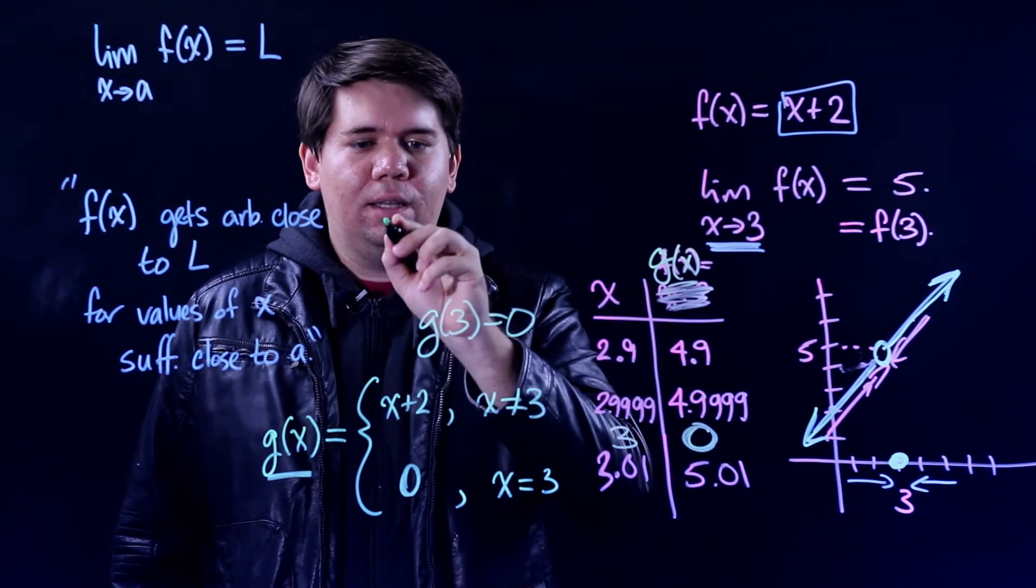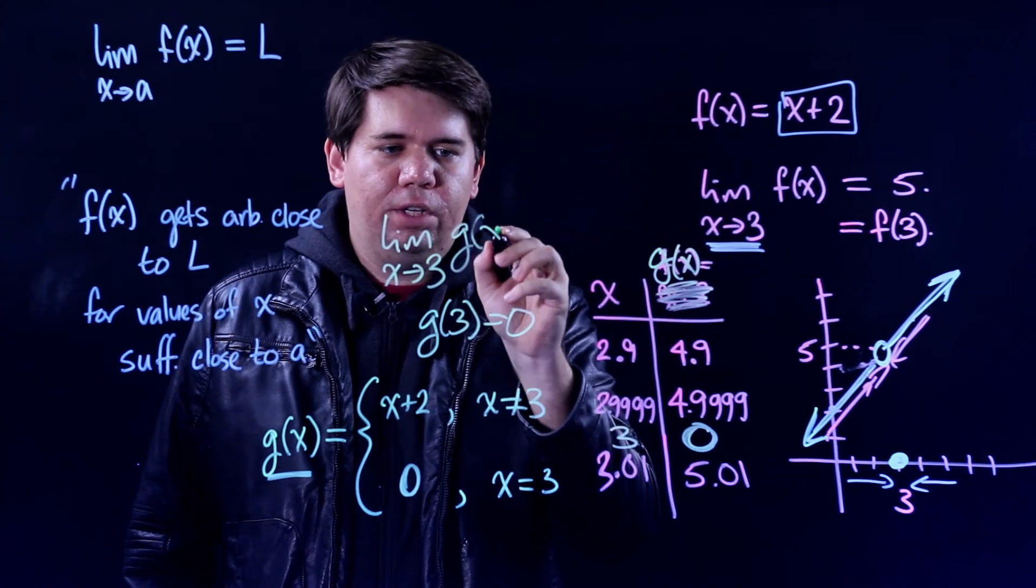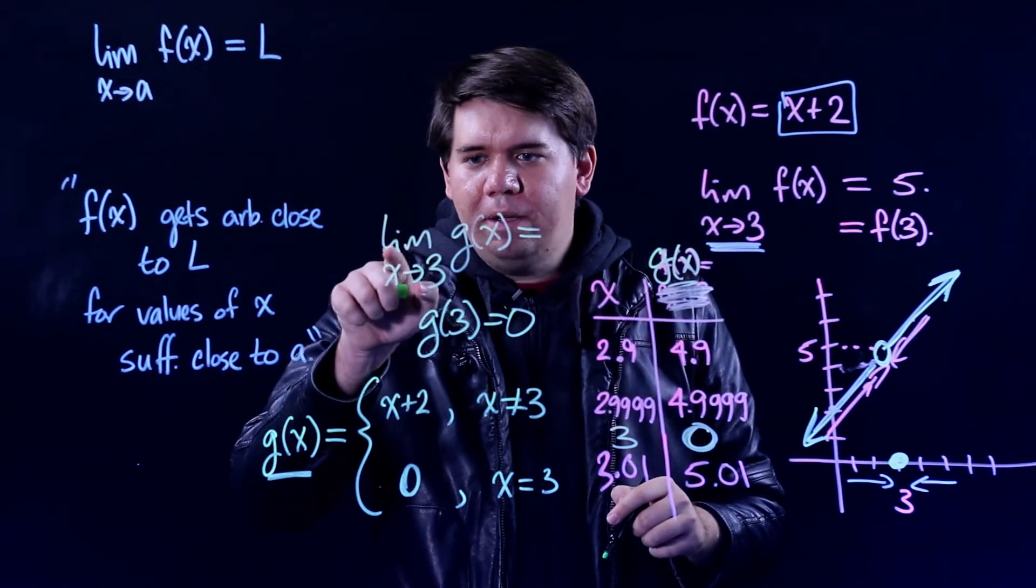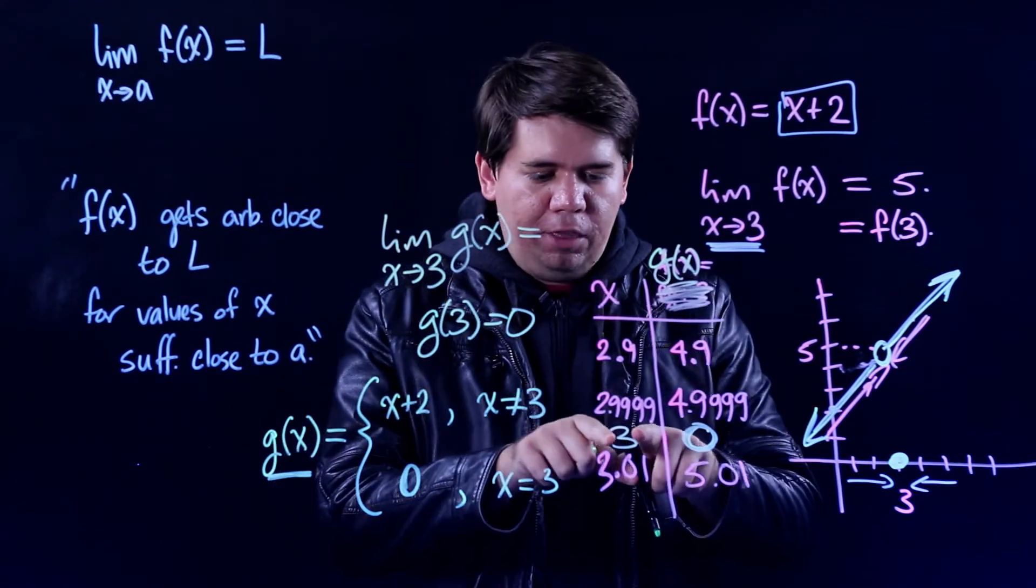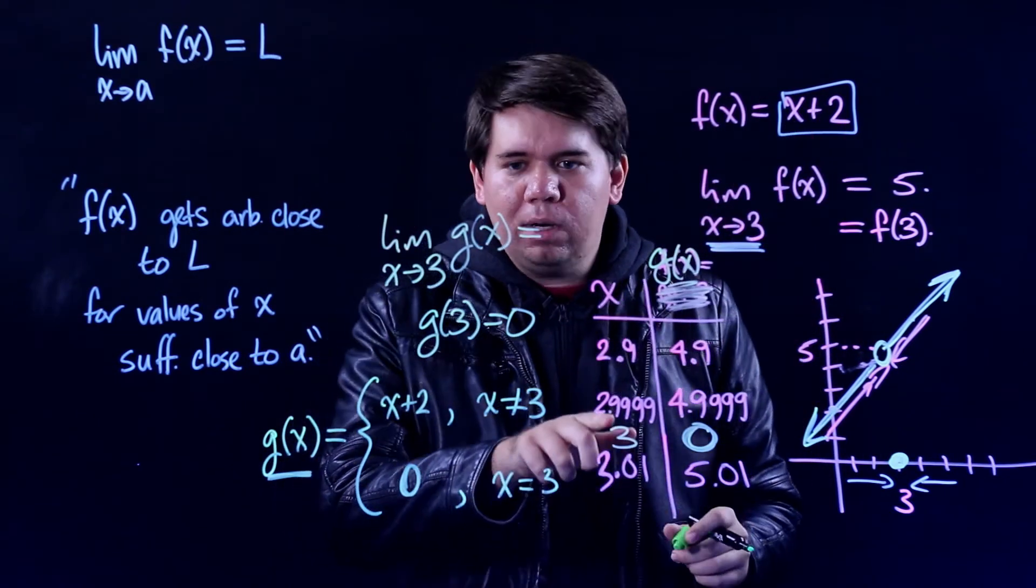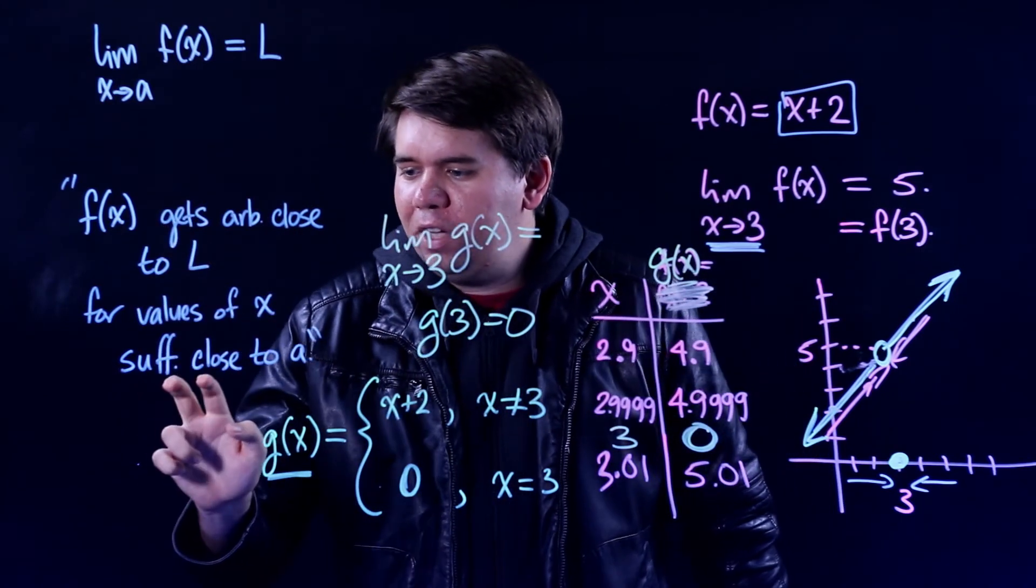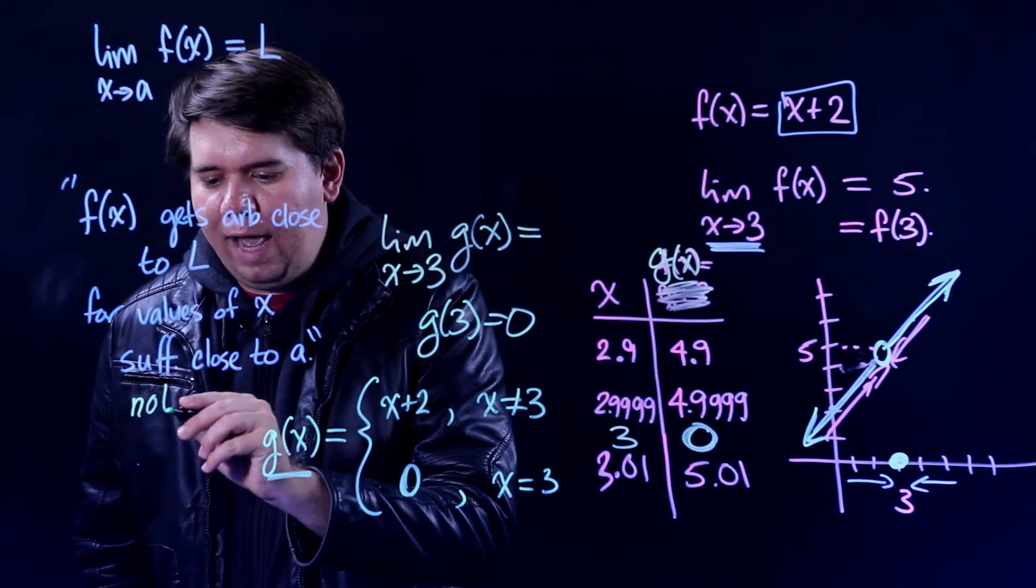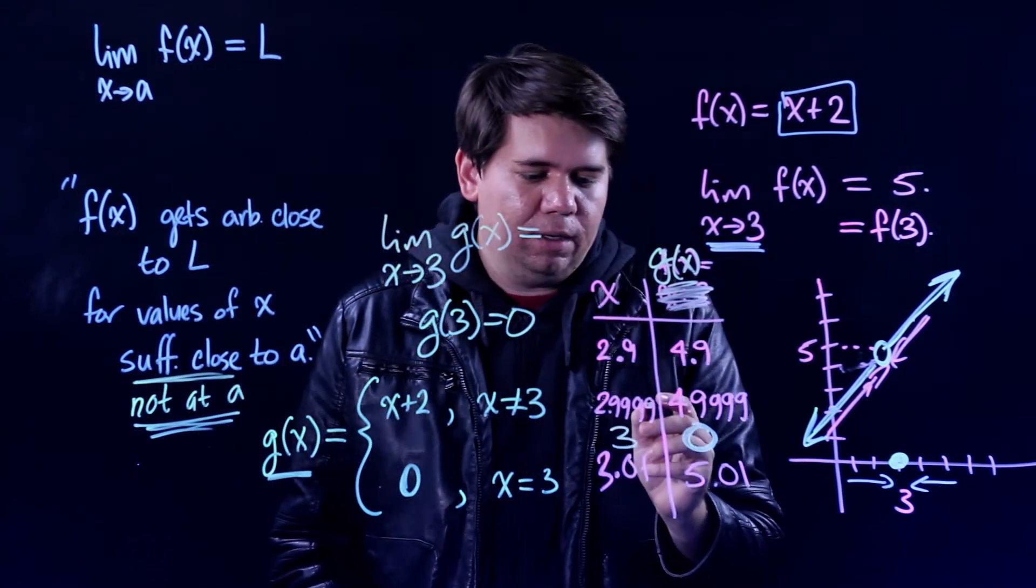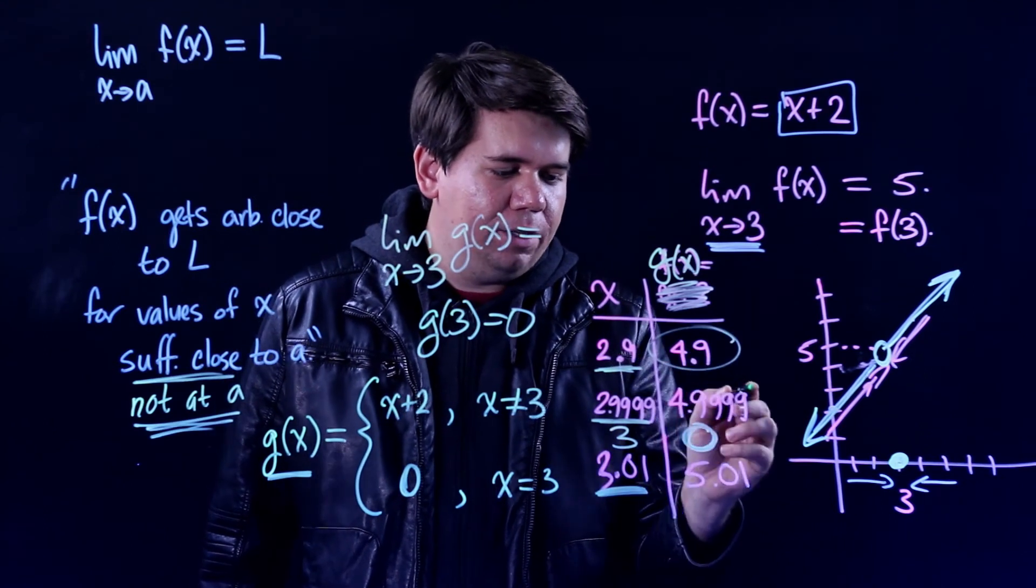Now the question is, what is the limit as x approaches 3 for g of x? And if you're just looking at this table, you might be like, well if x goes to 3, I'm going to get out 0. But no, no, no, that wasn't the definition of limit. You don't just plug 3 in. The definition of limits is what happens when your x is sufficiently close to a, not at a. Not when you plug in a, but when you're close to a. And whenever you plug in values close to 3, you're getting out values close to 5.